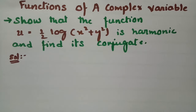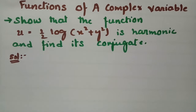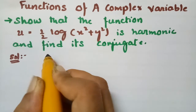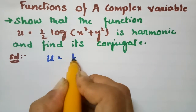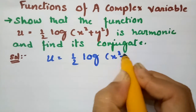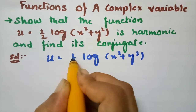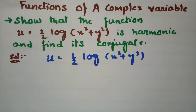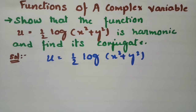In this video I am going to show that the function u is harmonic, as well as find its harmonic conjugate. This problem is from functions of a complex variable. u is given as half times log of x squared plus y squared. In order to show that u is a harmonic function, we have to satisfy the Laplace equation.